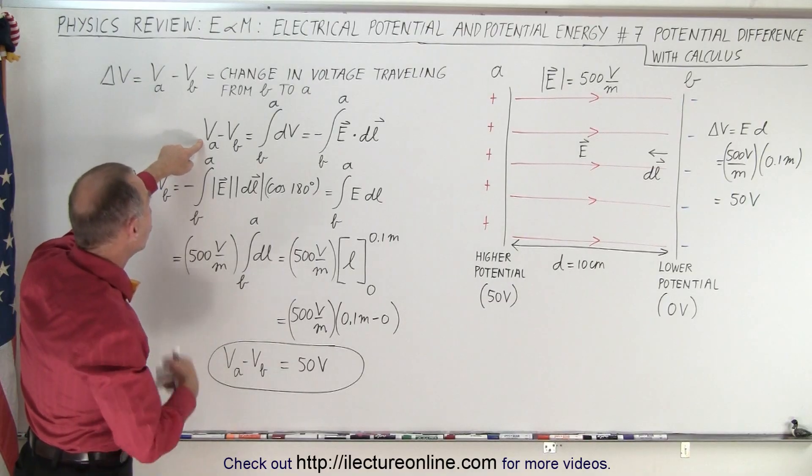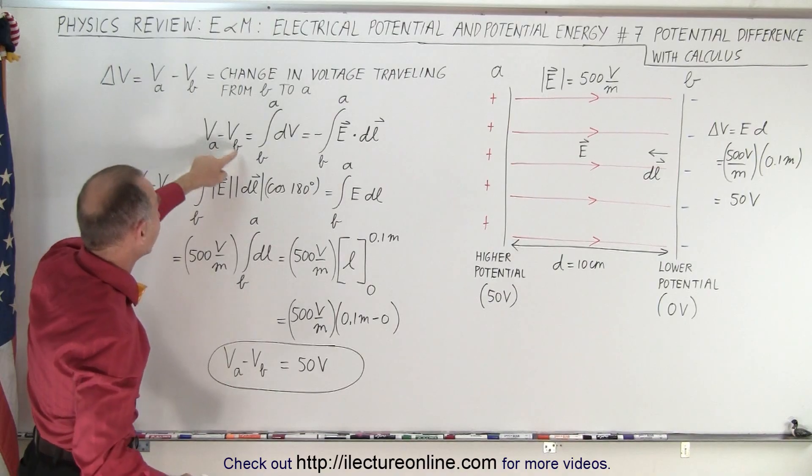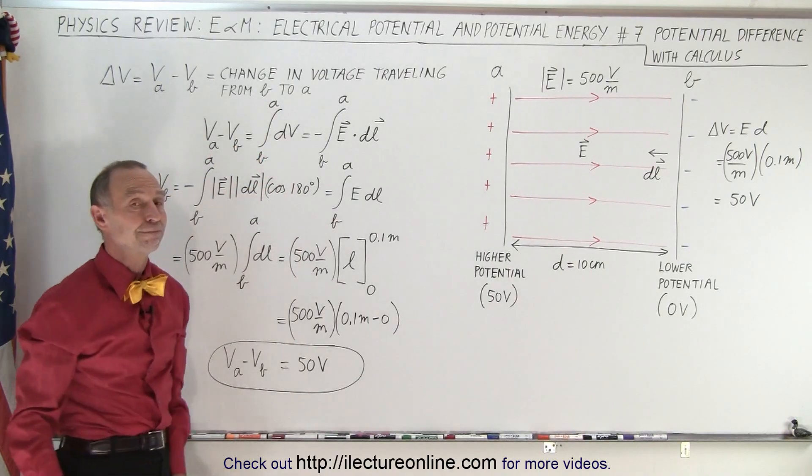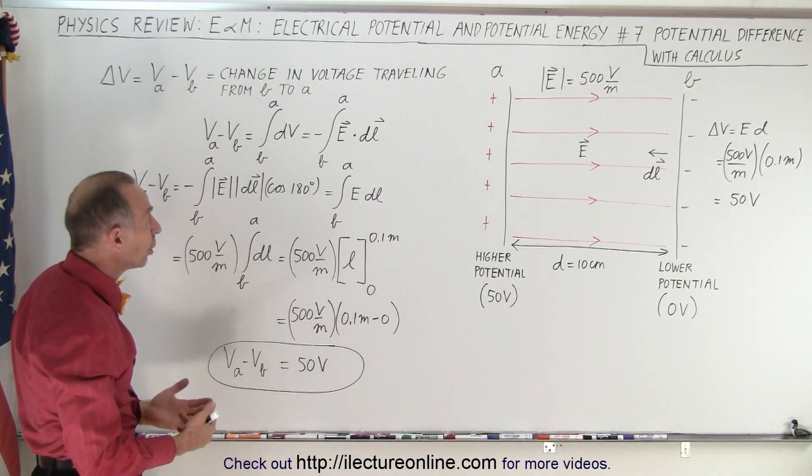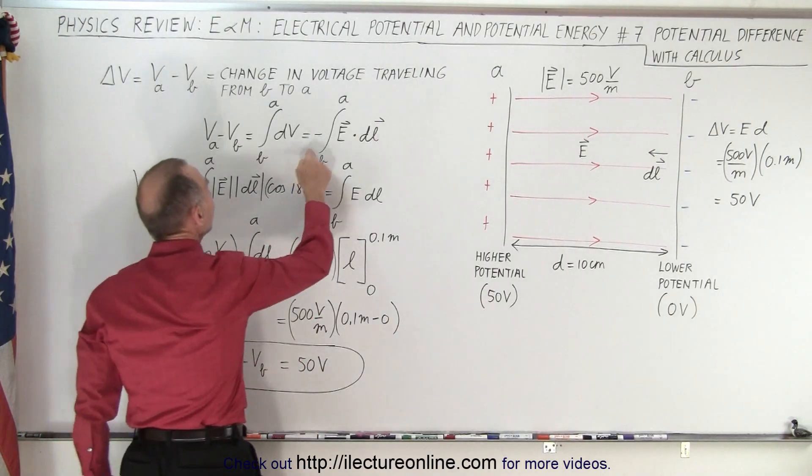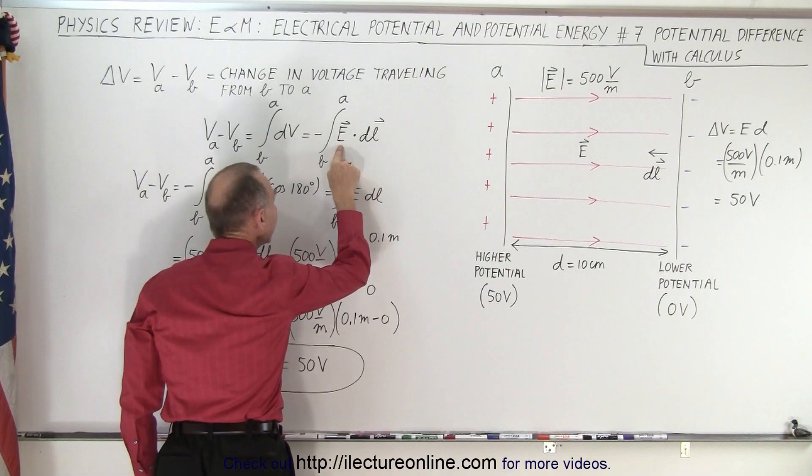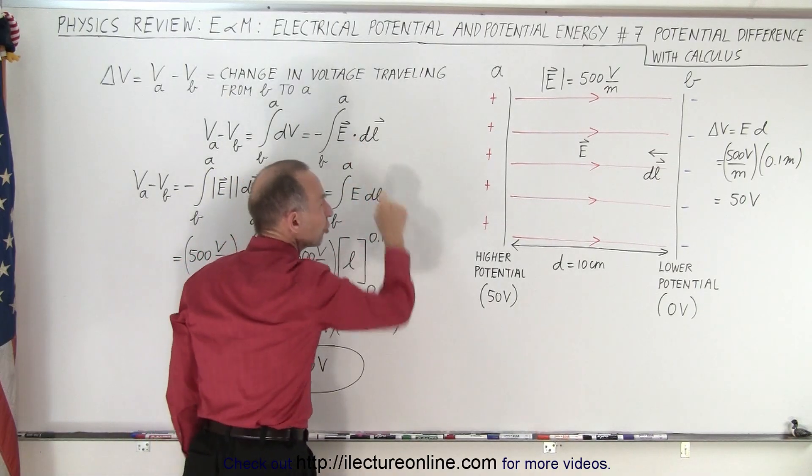So by definition, the voltage difference, the change in voltage traveling from B to A is equal to the integral of the DV going from B to A. Or it is equal to the negative integral of the dot product between the electric field and the direction of motion, dot DL.